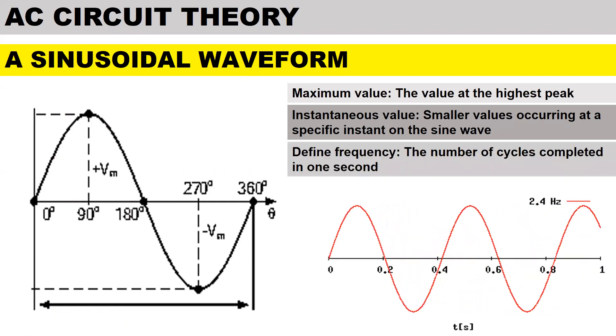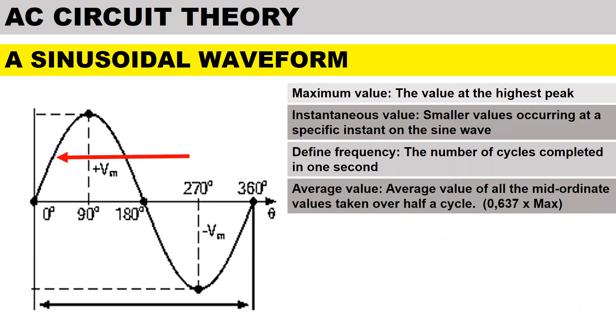To define frequency it's the number of cycles completed in one second. To determine the average value it's the average value of all the mid-ordinate values taken over half a cycle, and to calculate the average value it is 0.637 multiplied by the maximum value.